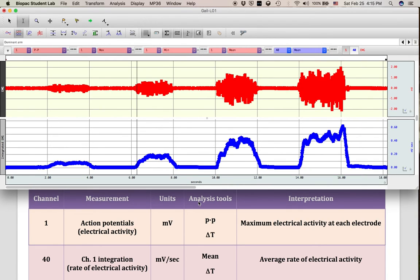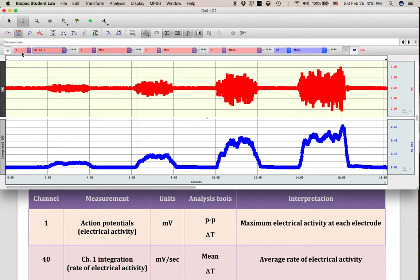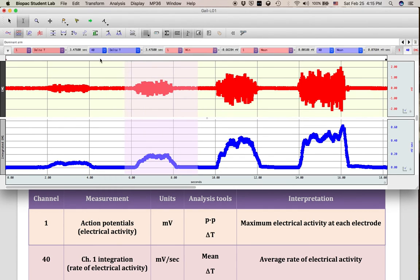We can also measure change in time using the delta T. If I choose channel 1 delta T and channel 40 delta T, I'd like to show you that those two values will always be the same because they're sharing this x-axis. What they differ on is their y-axis values, whether we have positive and negative or only positive values.